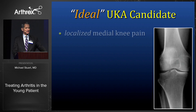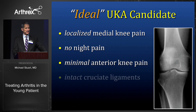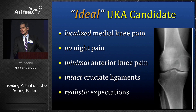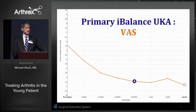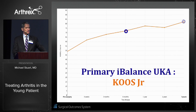Not everybody is the ideal candidate. The ideal profile includes localized medial knee pain, no night pain, minimal anterior knee pain, intact cruciate ligaments, good motion, and realistic expectations. I think they're awesome. However, durability in very young active patients is unknown, so I still make a plea for joint preservation surgery in that situation. The SOS results with primary UKA looking at visual analog pain scores are very favorable, as are KOOS Jr. scores at six months and three years.